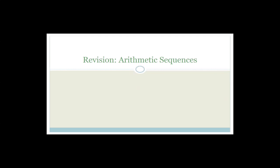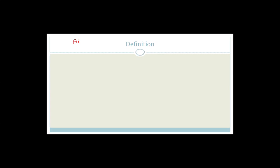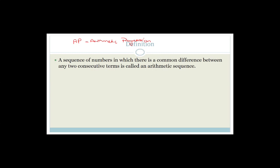So the first thing we do is revision of arithmetic sequences. You can also know them as APs, which stands for arithmetic progressions — it's the same thing. The definition: it's a sequence of numbers in which there is a common difference between any two consecutive terms. That is called an arithmetic sequence or arithmetic progression.